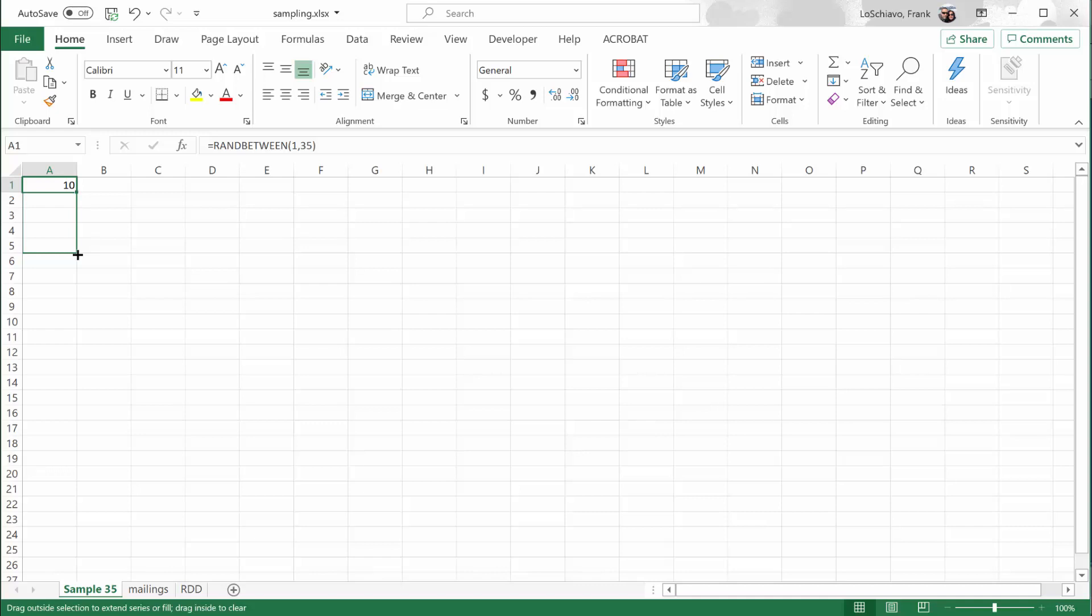Now Excel will update the entire worksheet when I lift up my mouse key. And that means that 10 is going to be replaced by another number. We're going to take those five numbers that Excel creates. And those are going to represent the five students we select.